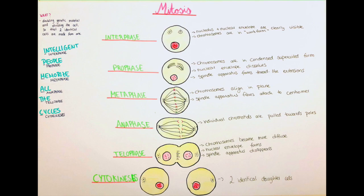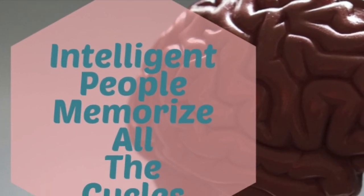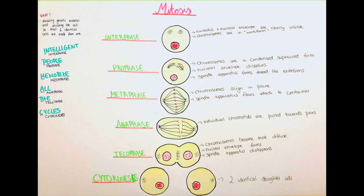I memorized it as intelligent people memorize all the cycles. And as you can see the mnemonic stands for all the phases so interphase, prophase, metaphase, anaphase, telophase and cytokinesis.